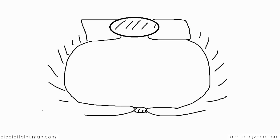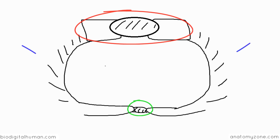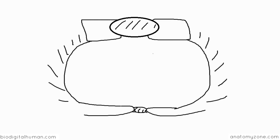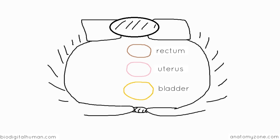I've switched over to a quick sketch. Posteriorly, we've got the sacrum, anteriorly we've got the pubic symphysis, and laterally we've got the pelvic side walls. Posteriorly we've got the rectum, anterior to the rectum we've got the uterus, and then at the front we've got the bladder. This diagram shows a horizontal section of the pelvic viscera, and I'm going to show you how the various ligaments attach to the uterus.